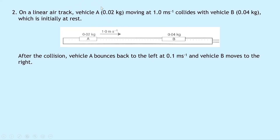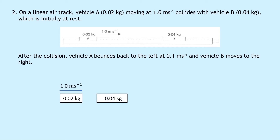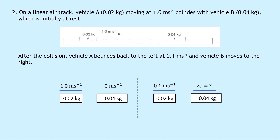Question 2 says that on a linear air track, vehicle A of mass 0.02 kilograms moving at 1.0 meters per second collides with vehicle B of mass 0.04 kilograms, which is initially at rest. After the collision, vehicle A bounces back to the left at 0.1 meters per second and vehicle B moves to the right. As always with these questions, it's a good idea to sketch the before and after situation. Before: vehicle A at 0.02 kg moving right at 1.0 m/s; vehicle B at 0.04 kg stationary. After: vehicle A moving left at 0.1 m/s; vehicle B moving right at unknown speed V2.